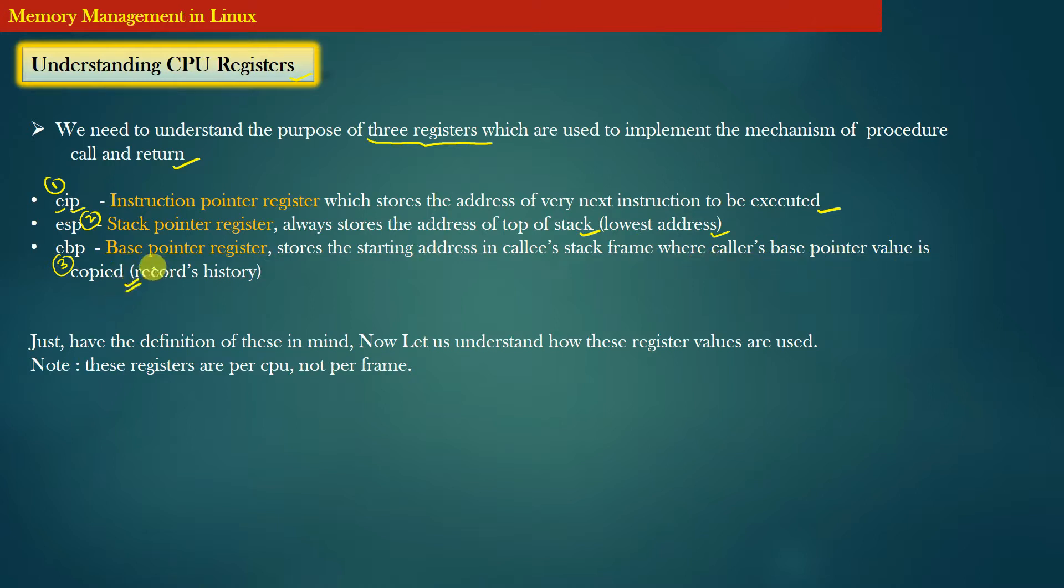Basically, base pointer register is used to store the history. I'm sure you have not yet understood base pointer register, so next we will understand the usage of all these three registers with the help of an example. Just have the definition of these three registers in mind. We will apply these definitions in the next example that we will discuss.